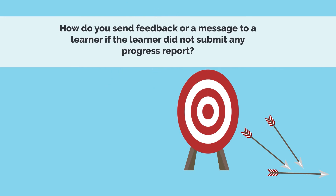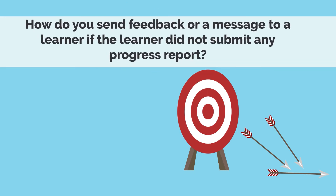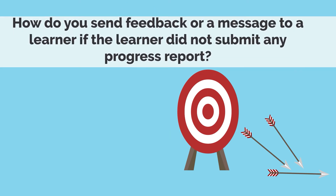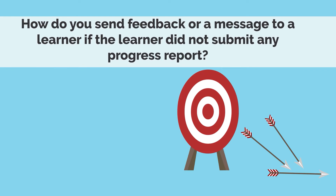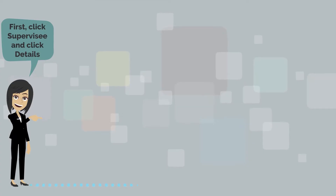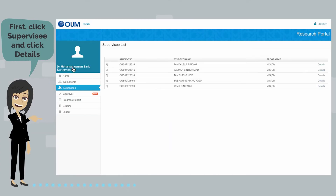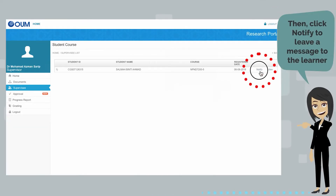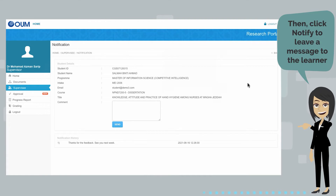As a supervisor, how do you send feedback or a message to a learner if the learner did not submit any progress report up until the end of semester? First, click Supervisee and click Details. Then click Notify to leave a message to the learner.